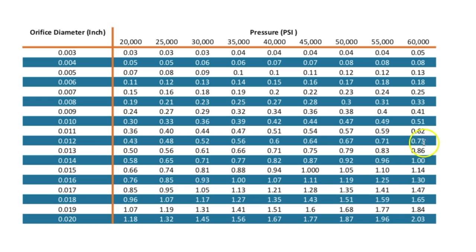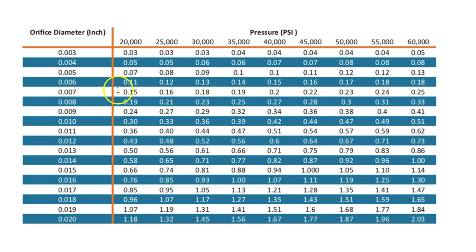Let's review the 50 horsepower pump which produces about 1 gallon per minute. On the chart at 60k, going down to 1 gallon per minute, we can see that we are able to support a .014 orifice — that's running a single orifice. If we want to run two orifices, we look for half a gallon per minute and we can run two .010 orifices. If we want to maximize the number of orifices, at a quarter gallon per minute we can run four .007 orifices.